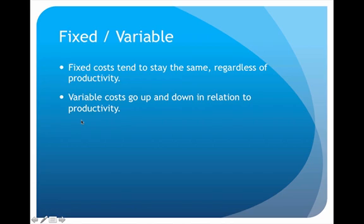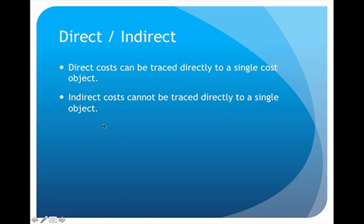Those are our first two classifications. Then you have direct versus indirect. A direct cost can be traced directly to a single cost object — for example, materials: we buy the material, we use it, and we can see it directly in the final product. Whereas an indirect cost cannot be traced directly to a single cost object. A good example there would be taxes — we're always going to have to pay taxes; we don't necessarily see directly where the money's going, but it is a cost that must be paid. That's the difference between those two categories.